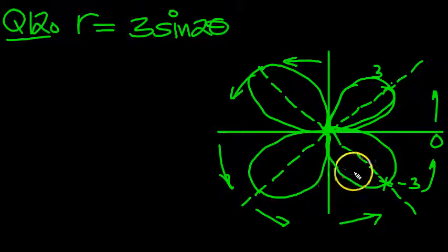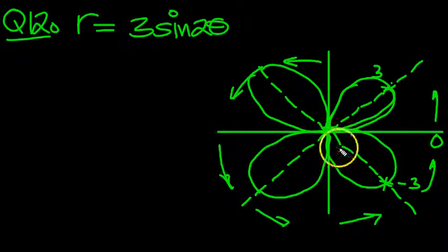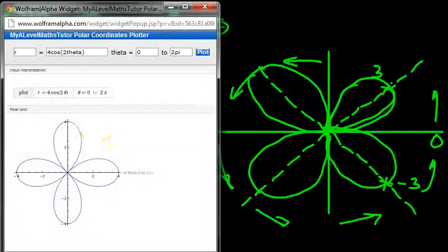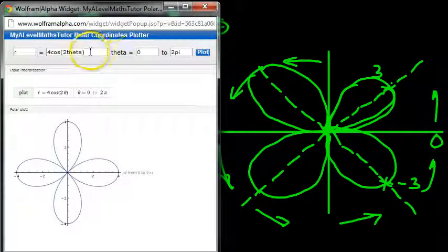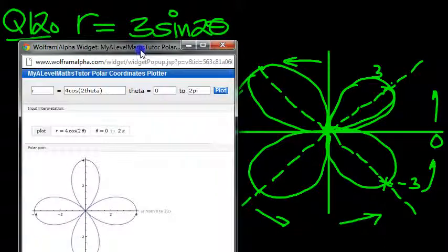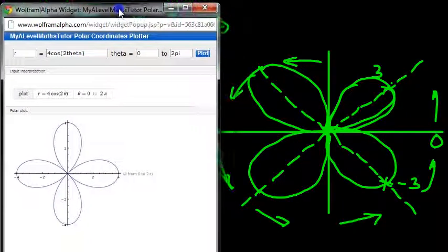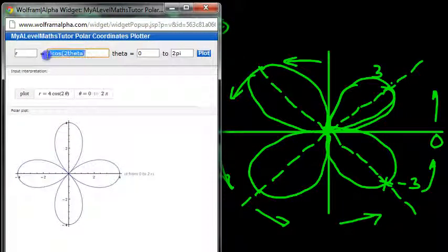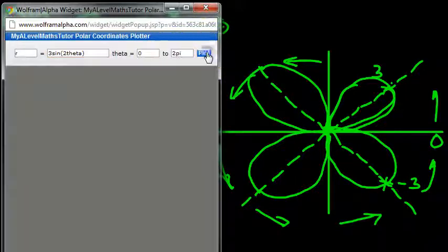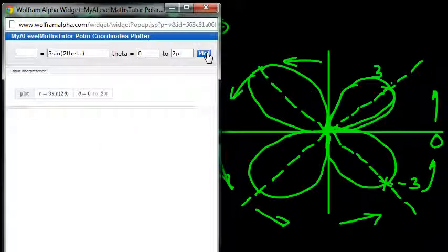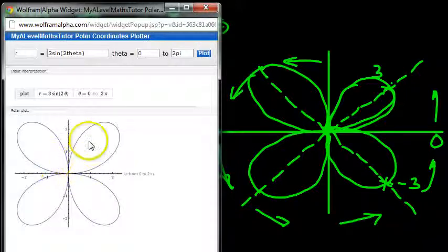So there's our plot of 3 sine 2 theta. First time through, a bit rough with a digital pen. So let's have a look at this. So we want to plot 3 sine 2 theta here. 3 sine 2 theta from 0 to 2 pi. And we get our function here.